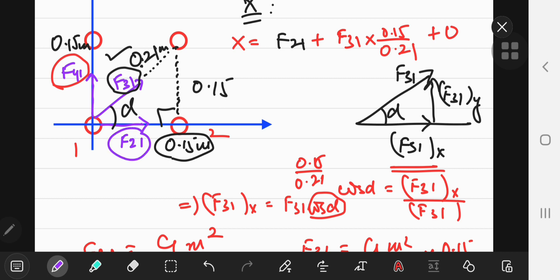We see that F sub 2, 1 is completely in the horizontal sense, but we will need all of F sub 4, 1, and we need F sub 3, 1, y component.